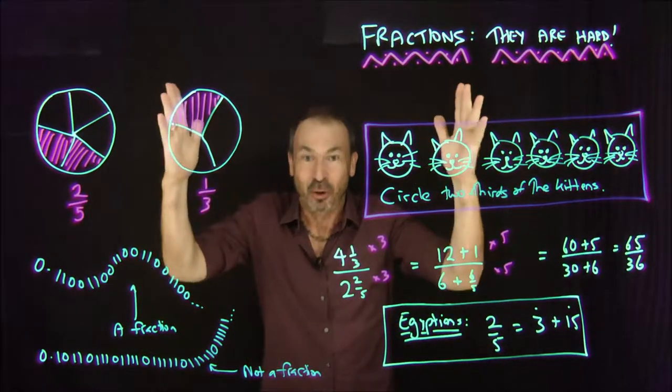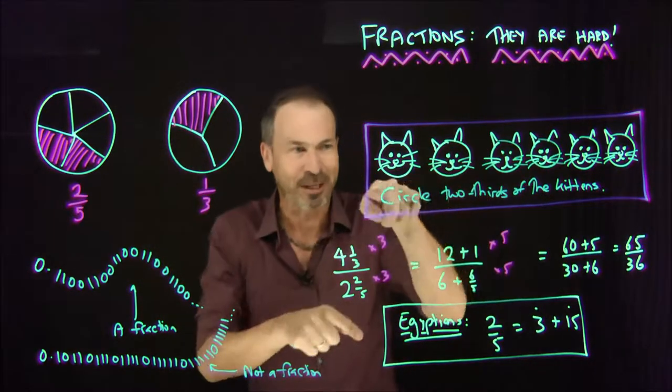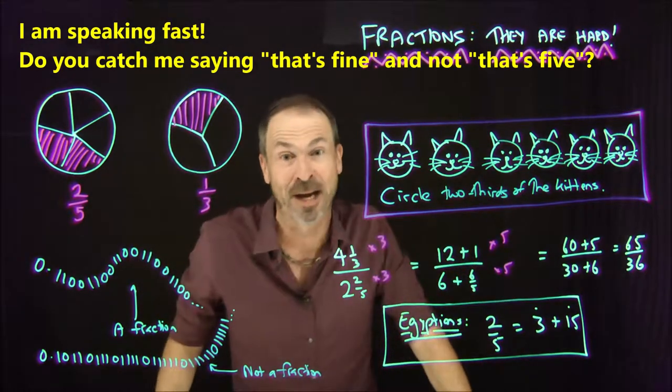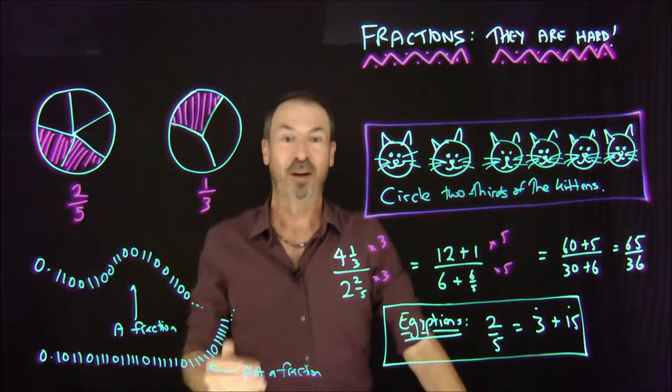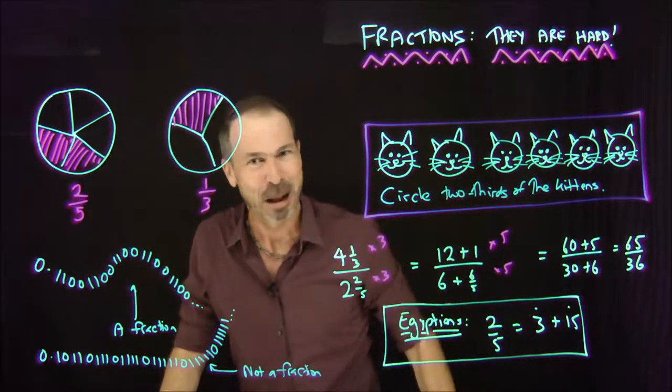Now of course, we know fractions start as a notion of a part of a whole. Please circle two thirds of the kittens. That's fine. When you circle two thirds of the kittens, you get a great intuitive feel - a fraction is a part of a whole. So we do pieces of pie, two thirds of pie, one third of a pie. Great. So a fraction is just a call to action. It's not actually a number right there.